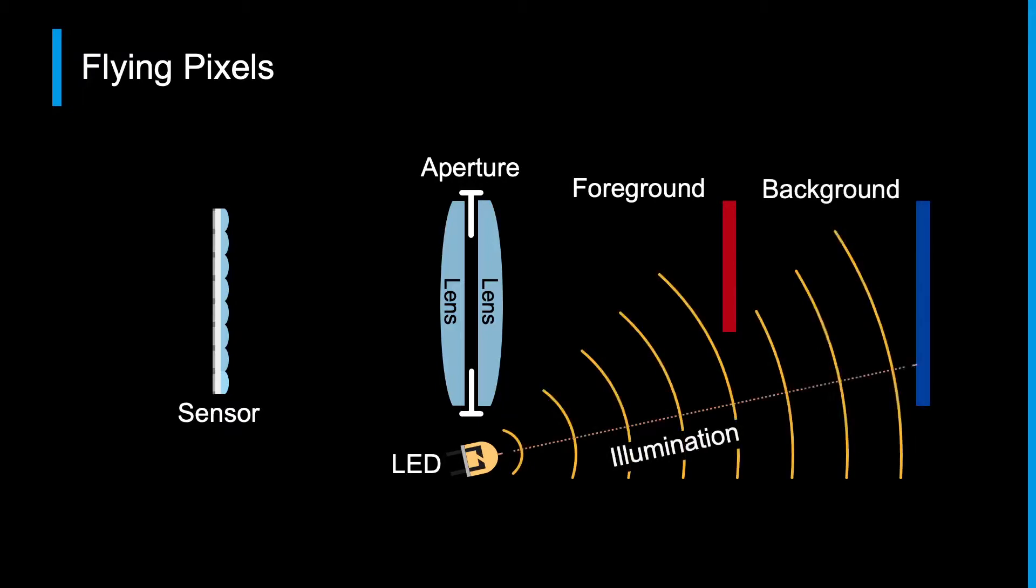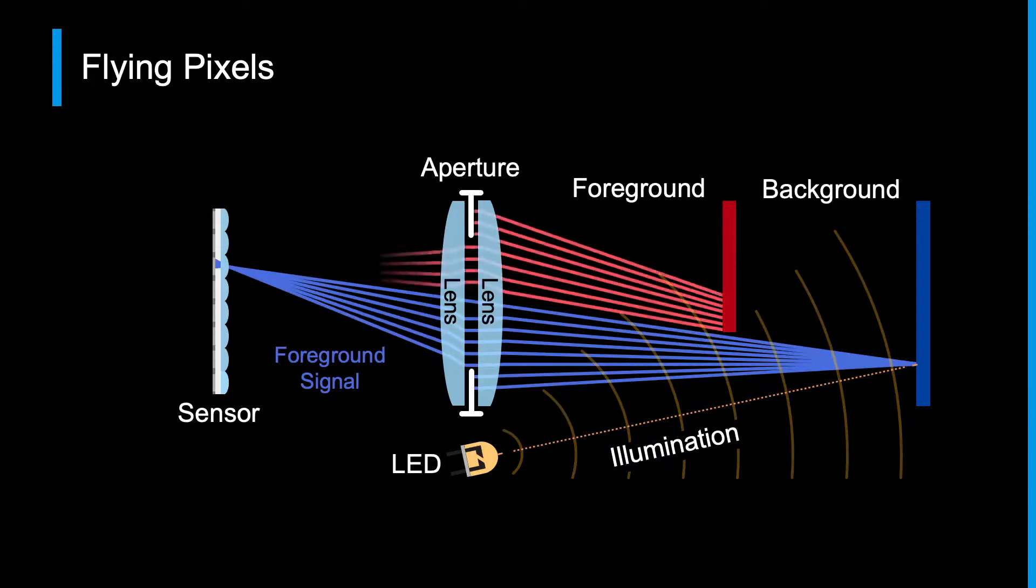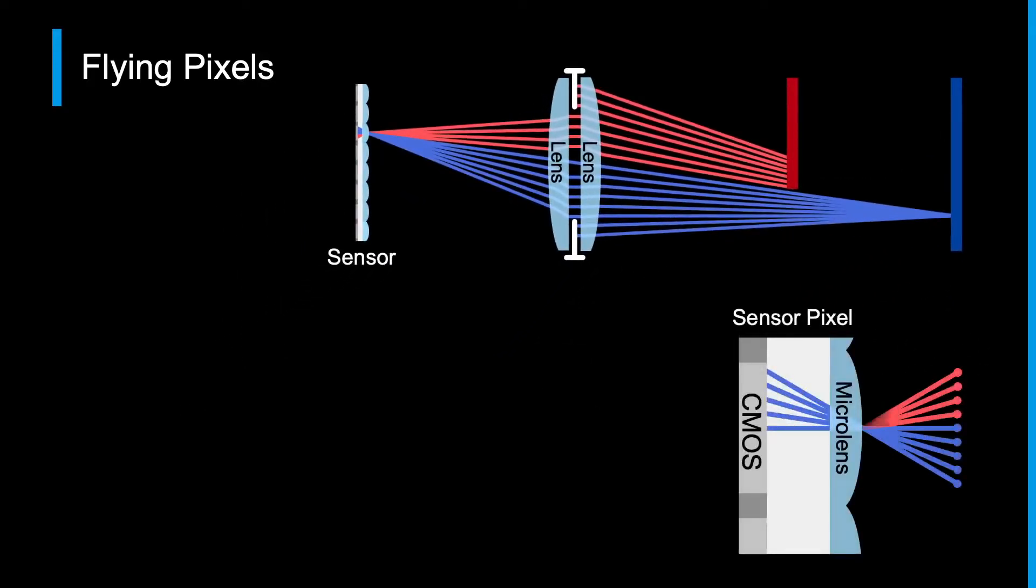When we flood the scene with our modulated illumination, part of our return signal will be focused light from the background, which we consider the correct depth, and part of it will be unwanted, unfocused light from the foreground. This mixed phase light is integrated over the sensor microlens to produce a mixed depth measurement, a so-called flying pixel.